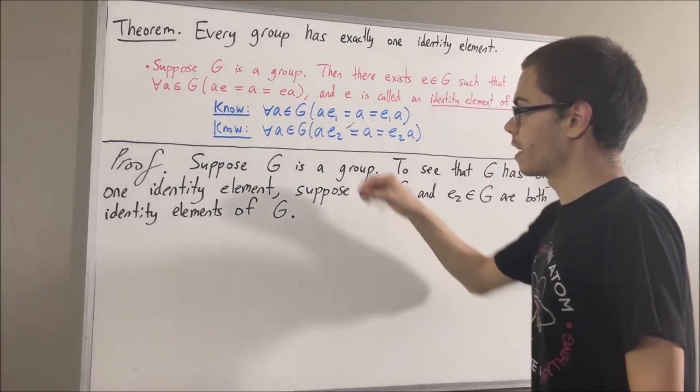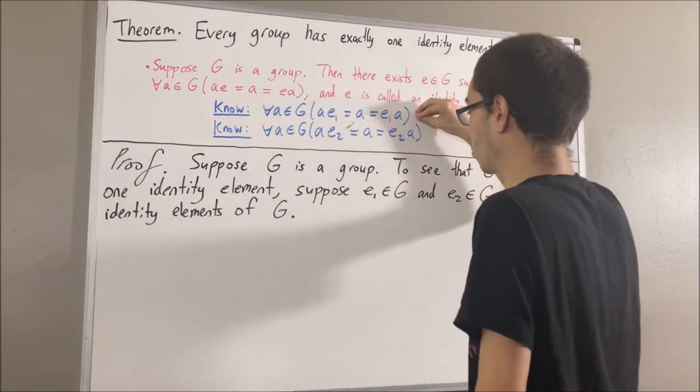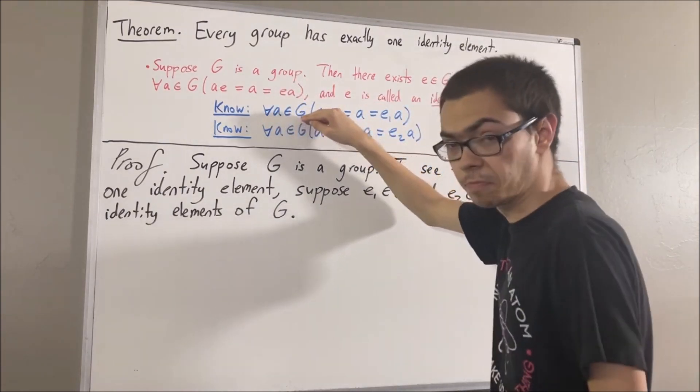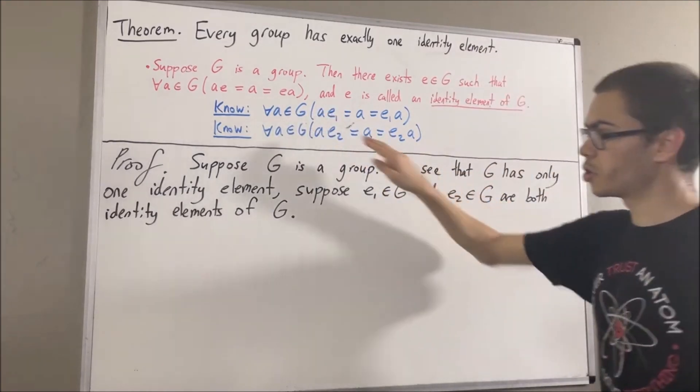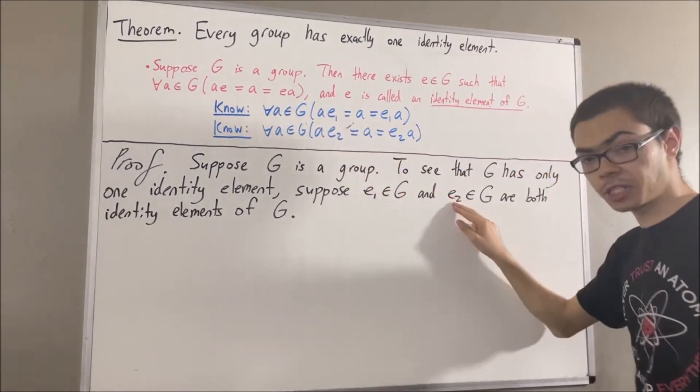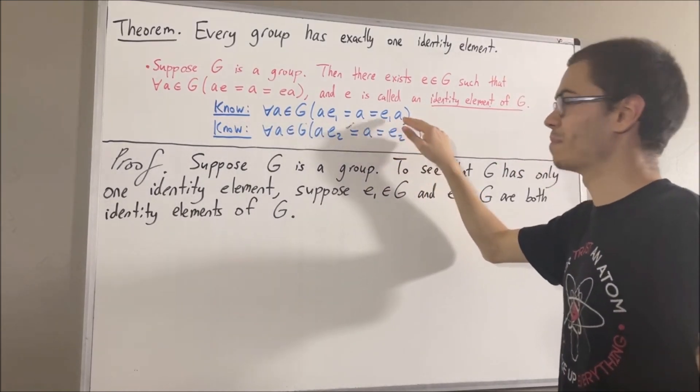Okay, now, since this first statement is true, we know that this first statement works for every element in G. So in particular, it must work for e2. So if we take a to be e2, then we have that e2 is equal to e1 times e2.